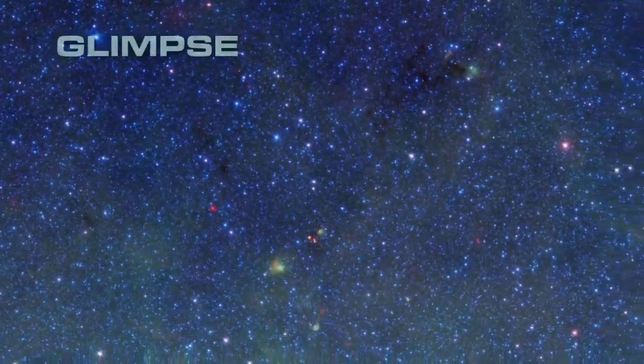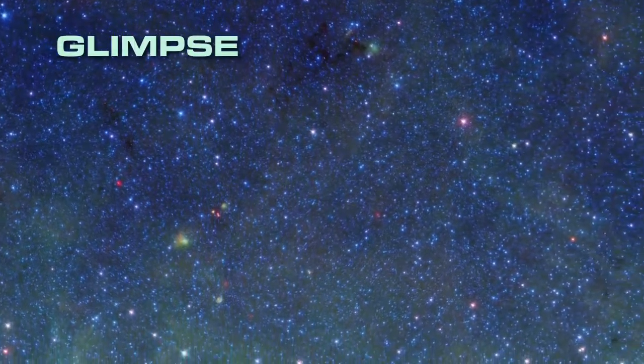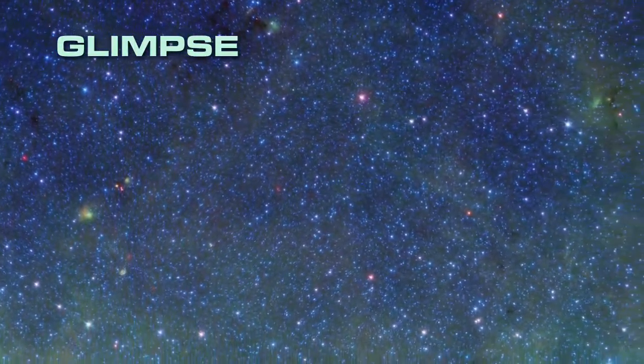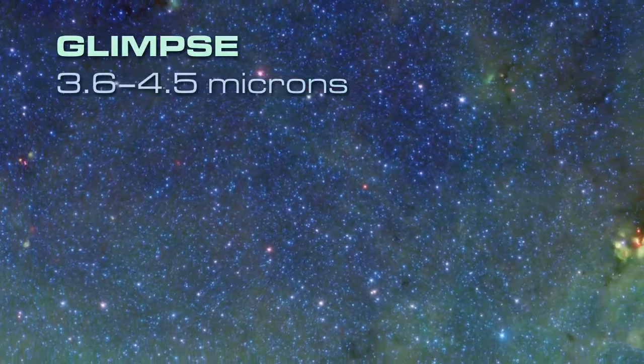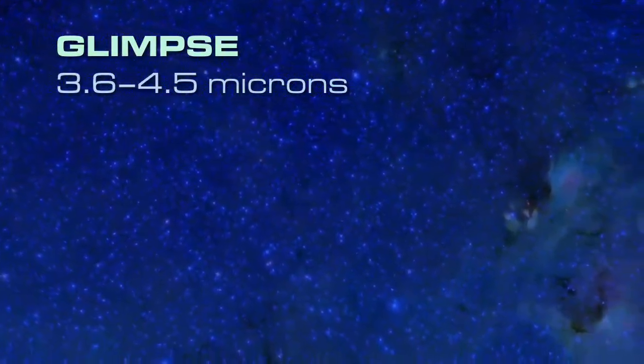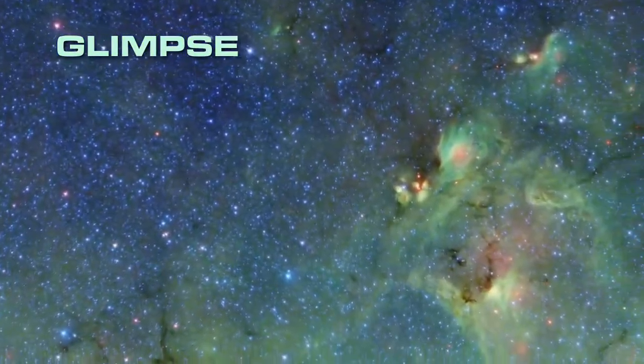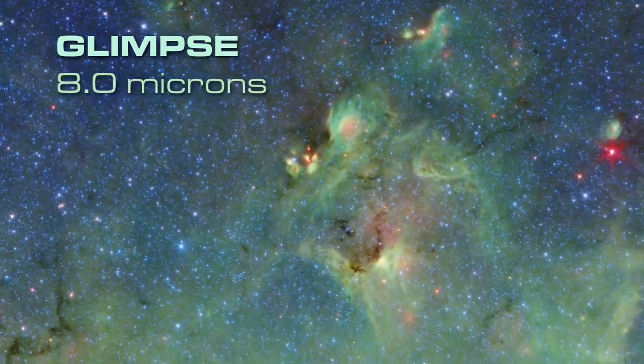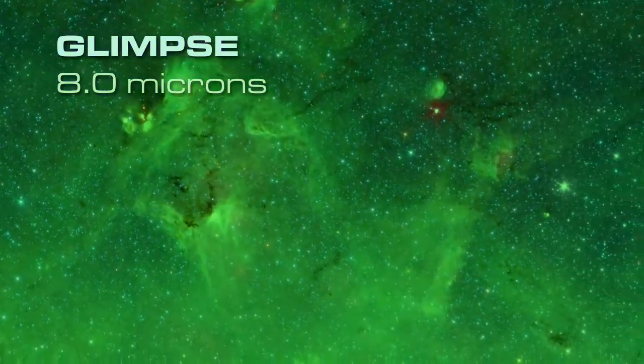The GLIMPSE part of the survey includes the shorter infrared wavelengths. At 3.6 and 4.5 microns, we see blue stars that in visible light are completely hidden by dust. Carbon-based dust molecules show up at 8 microns, represented as green.